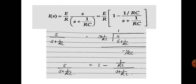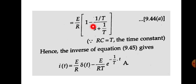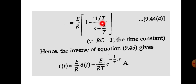Let τ = RC be the time constant. So I(S) = (E/R)·[1 − (1/τ)/(S + 1/τ)]. Taking the inverse Laplace transform: the inverse Laplace of 1 is δ(T), and for the second term, 1/τ is a constant taken outside, and 1/(S + 1/τ) is in the form 1/(S + A) whose inverse Laplace transform is e^(−AT). So the impulse response is: I(T) = (E/R)·δ(T) − (E/(Rτ))·e^(−T/τ). This is the impulse response of the series RC circuit for a constant impulse function.